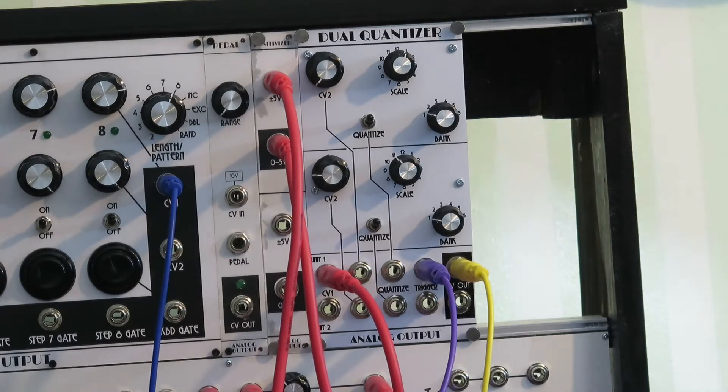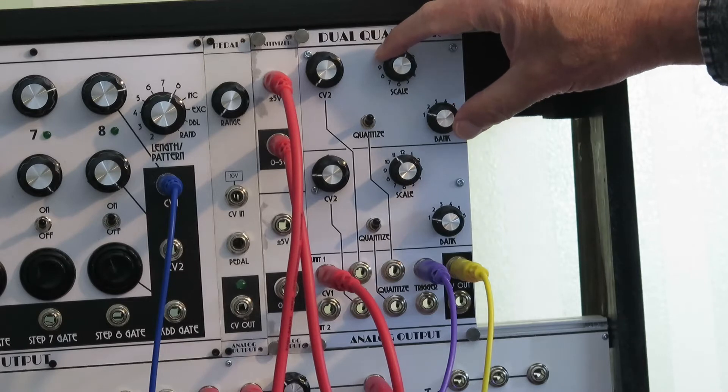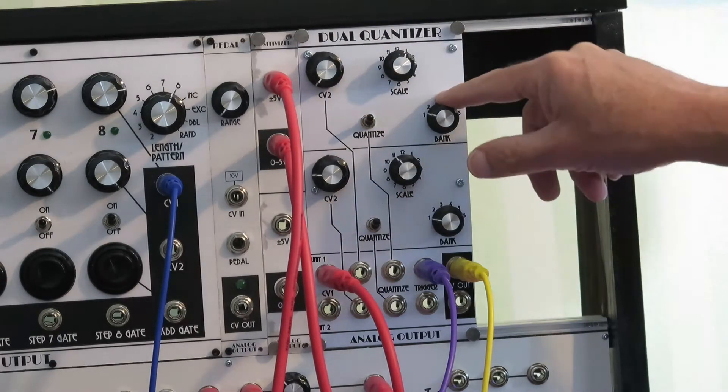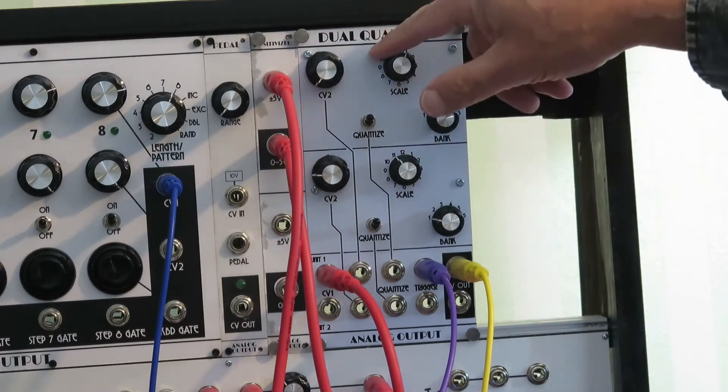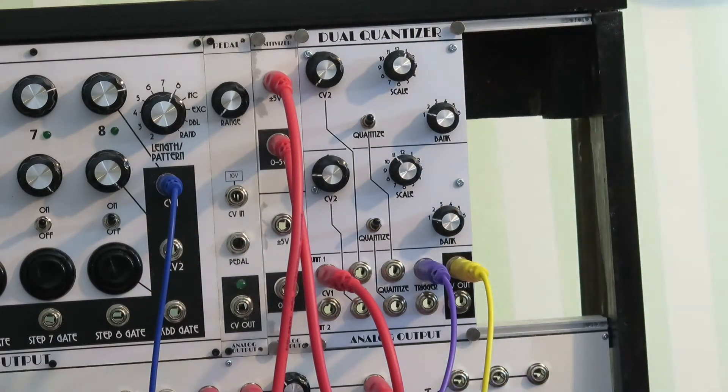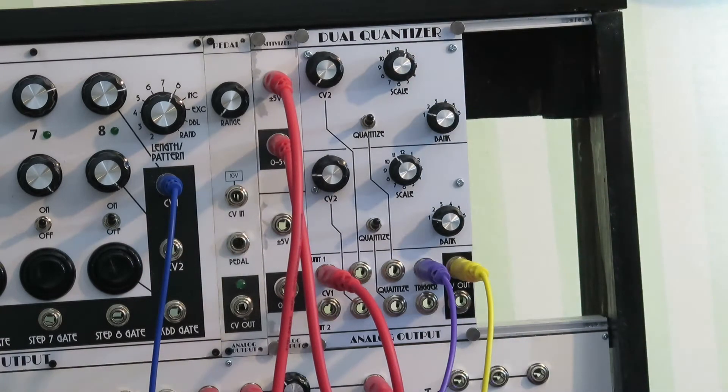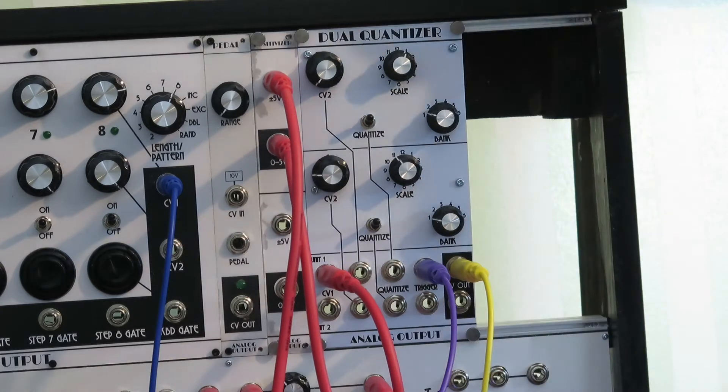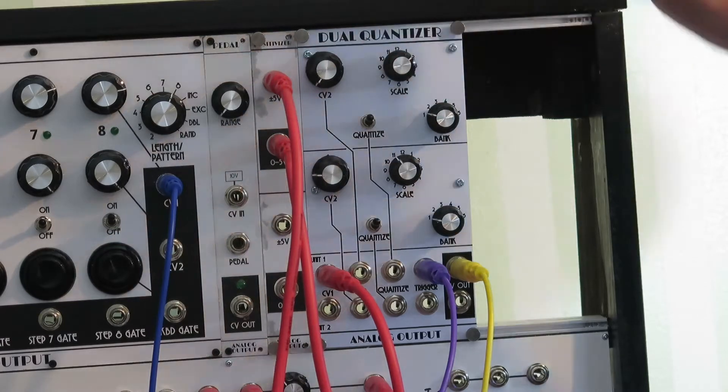Okay, why is it the equally tempered scale? Well, that's because of what we've chosen here. But we have switches here that will allow you to change to different scales. This switch allows you to choose one of six banks of scales. This switch allows you to choose one of 12 scales within that bank. So this is bank one, scale one, which is a chromatic equally tempered scale. But we can go to scale two, which is a major scale.